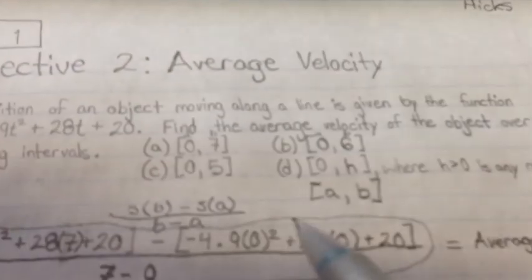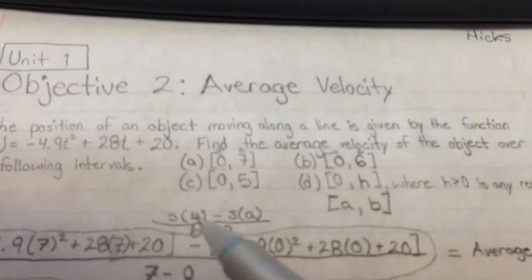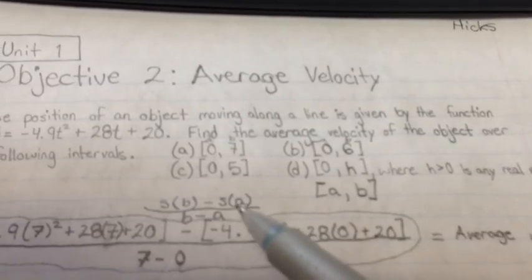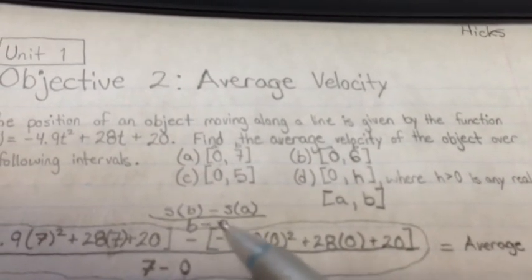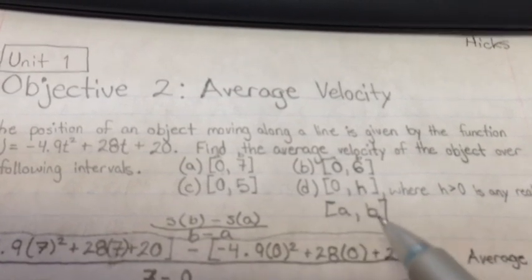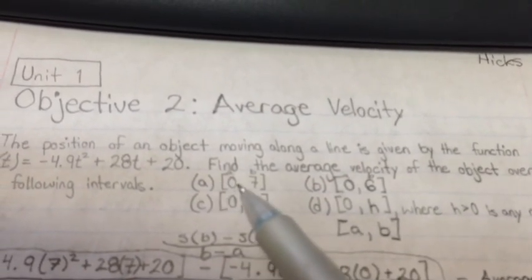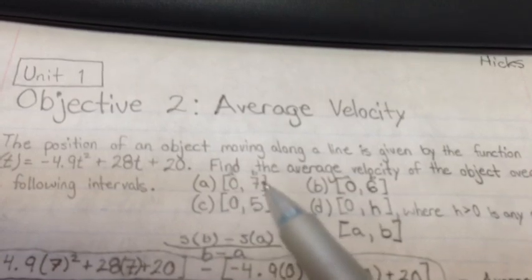In order to find this out, you have to use the formula for the average velocity, which is that top part right there. S(b) - S(a) divided by b - a, where your interval is [a, b]. So if this is your interval, the 0 would be the a, and the 7 would be the b.